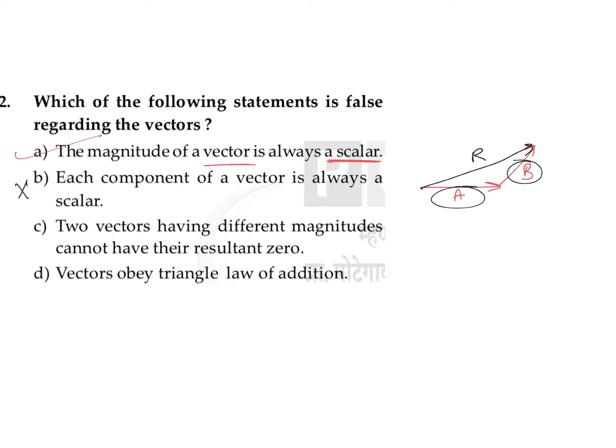Third statement is given that two vectors having different magnitudes cannot have their resultant zero. So if two vectors are having different magnitude, and if you are having only two vectors, let's say a vector and another vector.